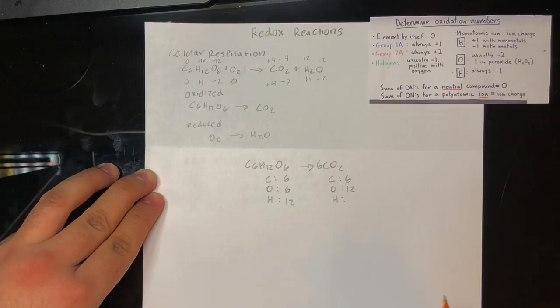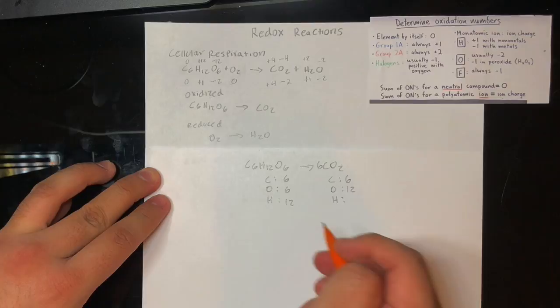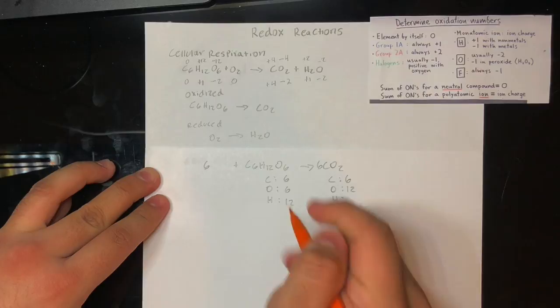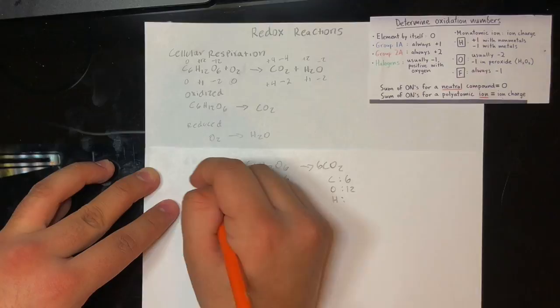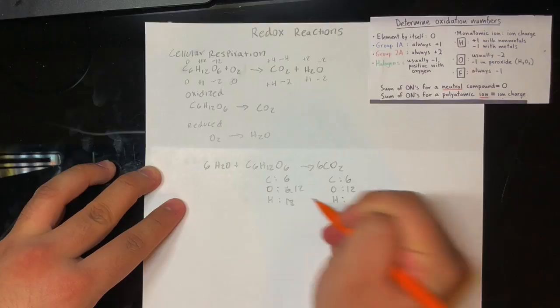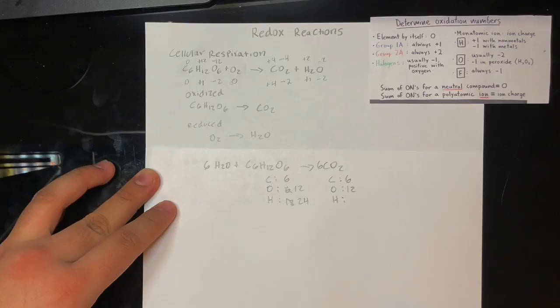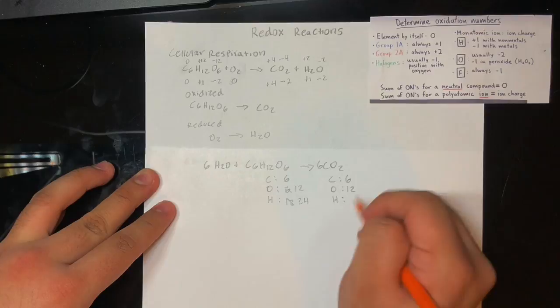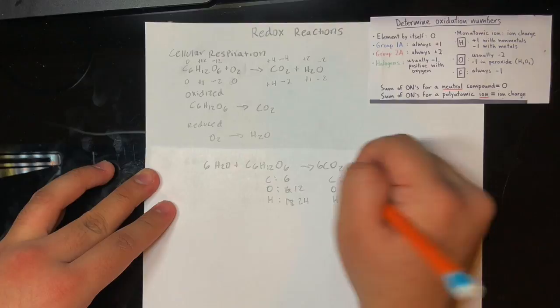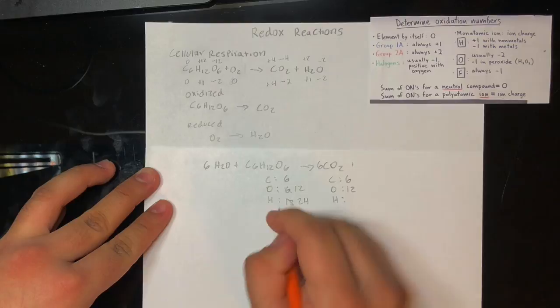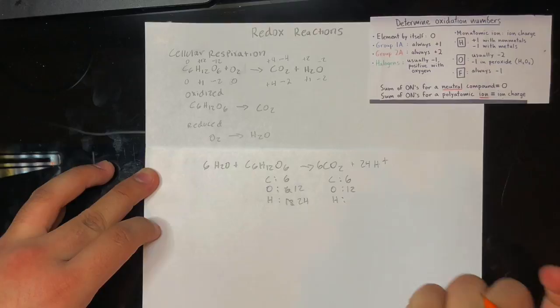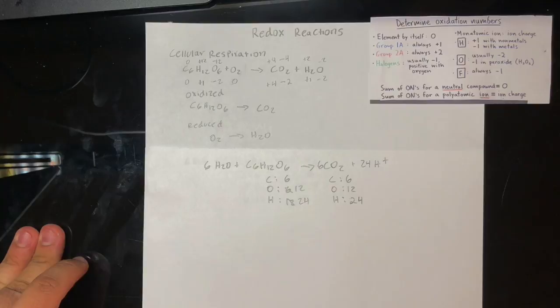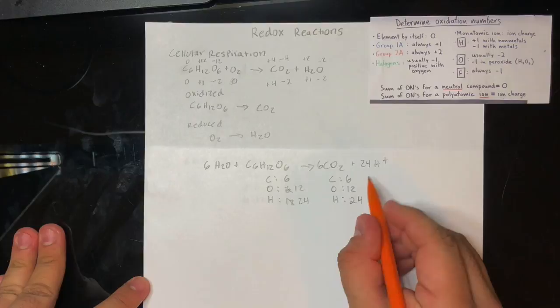When balancing, you always start by balancing oxygen by adding water. We have six extra oxygens, so we add six water molecules to give us six more oxygens, making 12 total. Now we have 24 hydrogens on the right side and none on the left, so we add 24 protons to the left. Now there is a charge of plus 24 on the left and a net charge of zero on the right, so to balance the charges we add 24 electrons to the left side. That half-reaction is now balanced.